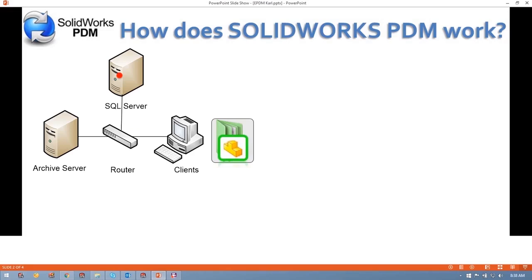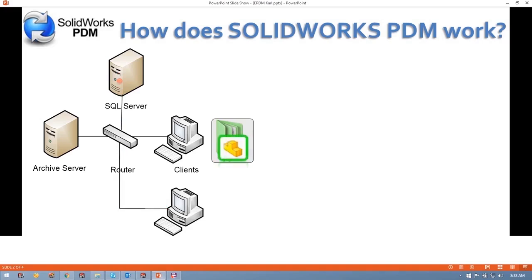Now what if someone else wants to open up this file on our network? Other people on our network will still be able to open up the file. Their machine will ping the SQL Server, and the SQL Server will let them know that I have this file checked out. They'll still be able to open it and reference it, but they can only open it in read-only mode until I've released this file.